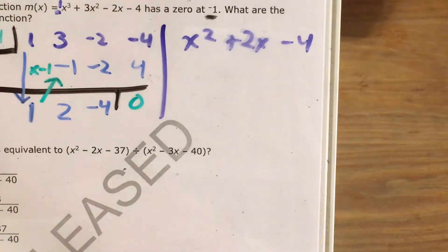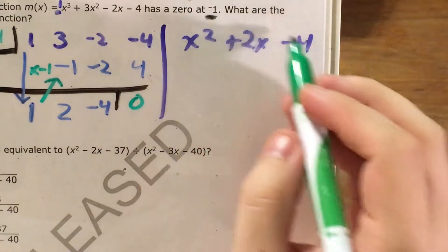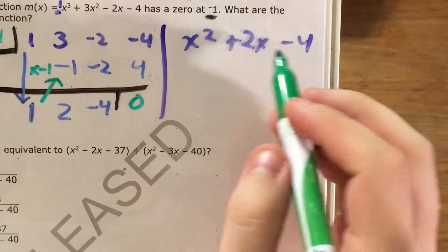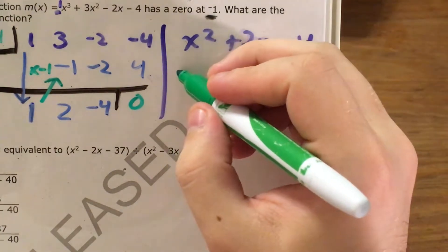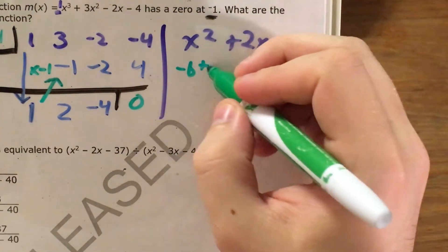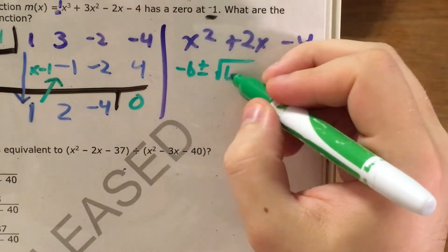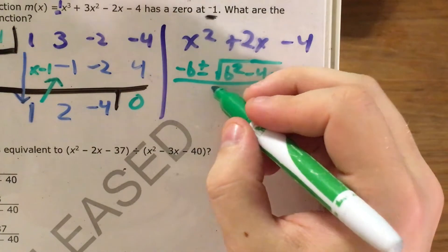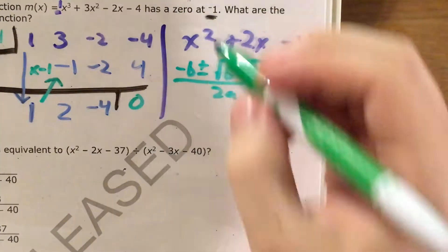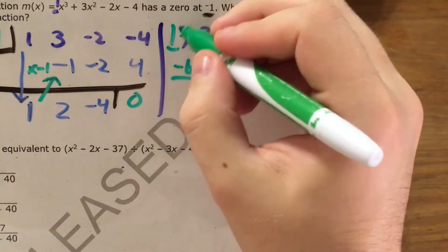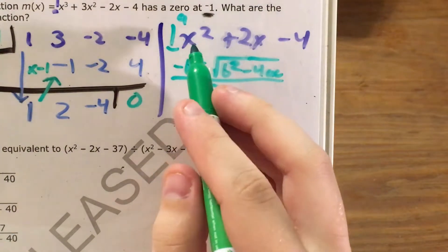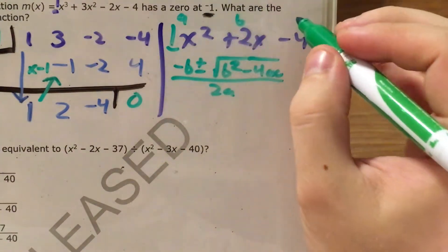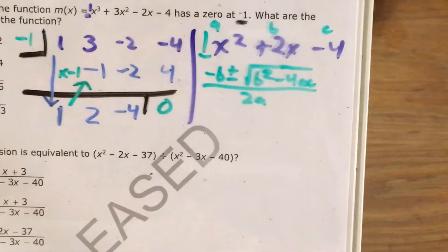And if you remember, the quadratic formula is whenever this equals zero, we can find our zeros by doing negative b plus or minus the square root of b squared minus four ac all over two a, where the imaginary one in front of x squared is my a, two is my b, and then negative four is my c.